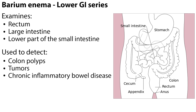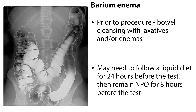A lower GI series, or barium enema, is done to examine the rectum, large intestine, and the lower part of the small intestine. It is used to detect colon polyps, tumors, and chronic inflammatory bowel disease. Prior to the procedure, the patient must cleanse the bowel with laxatives and/or enemas. They may also need to follow a liquid diet for 24 hours before the test and then remain NPO for 8 hours before the test.